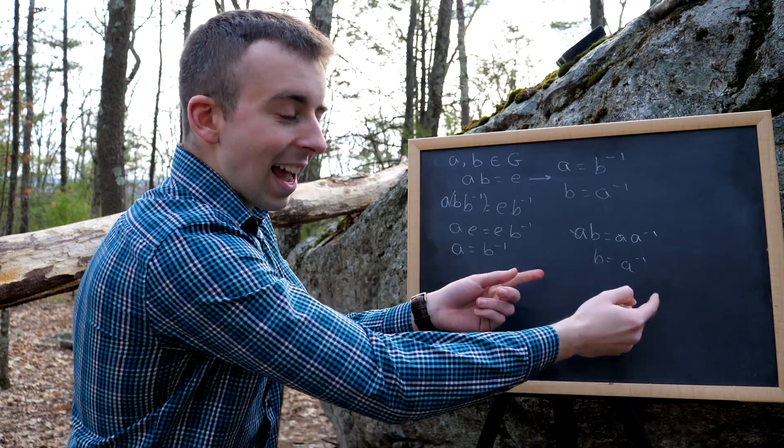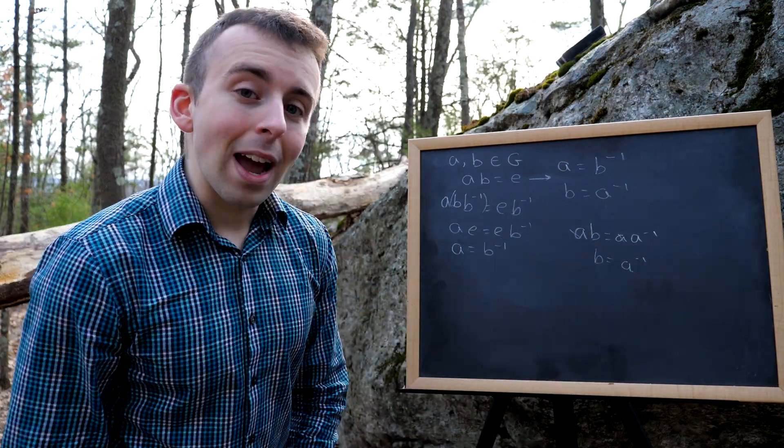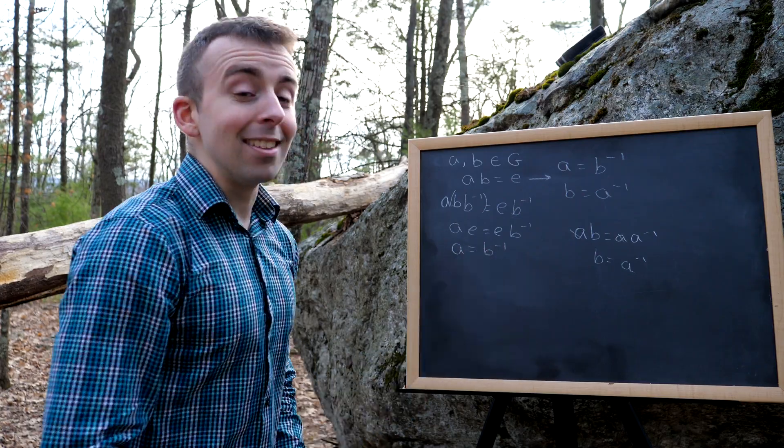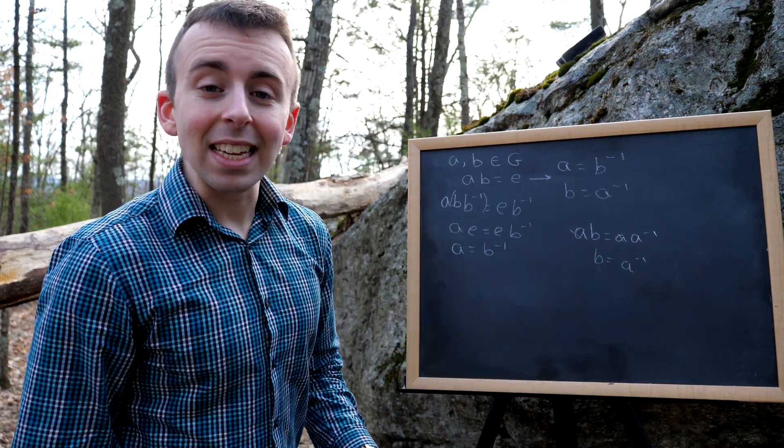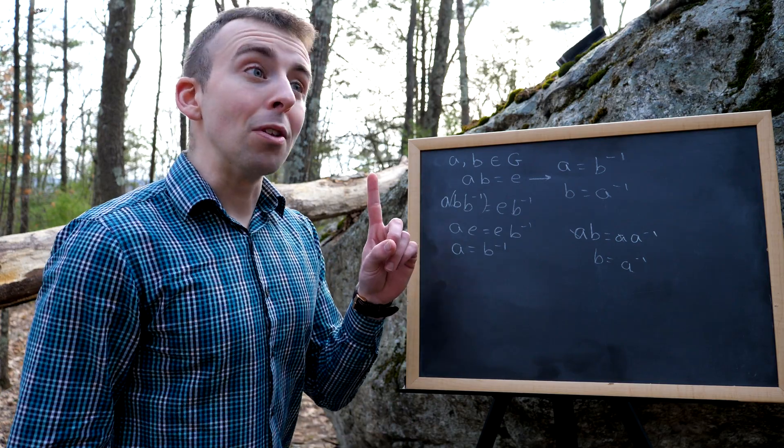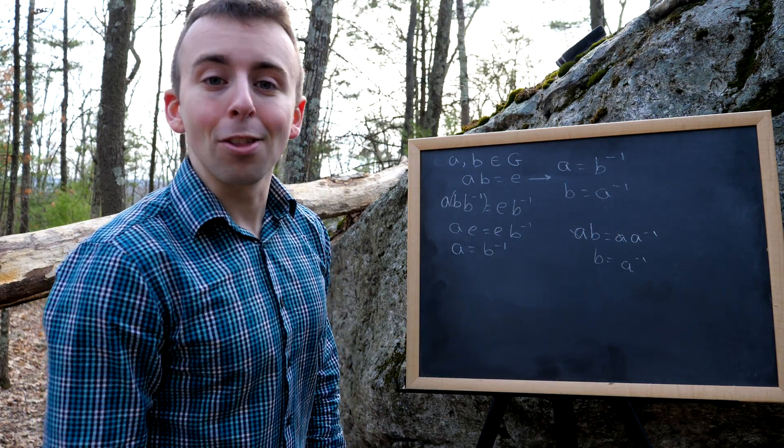So now we've proven that A and B are inverses of each other. But again, you could use this same strategy to prove that A is an inverse of B. You would just replace the identity element E with B inverse times B, and then you could cancel the B's on the right.